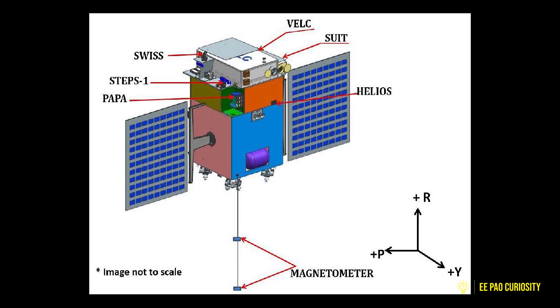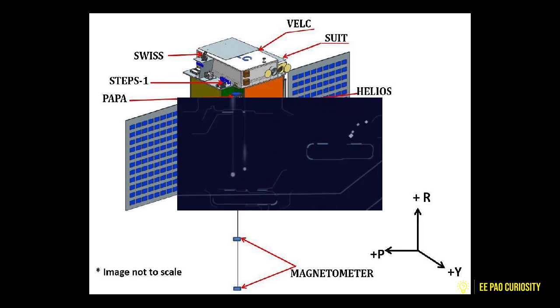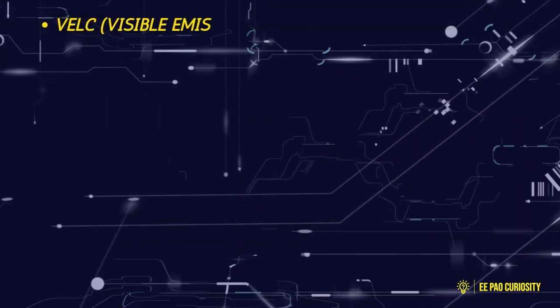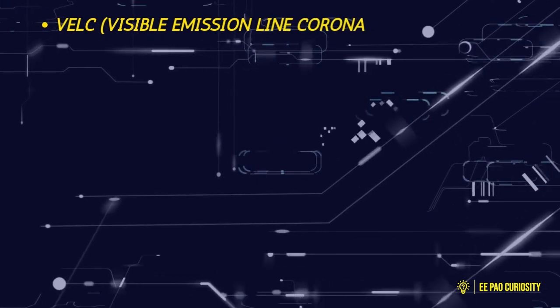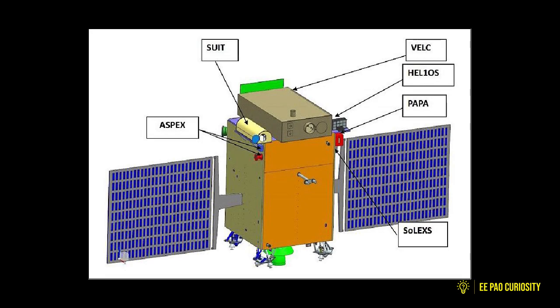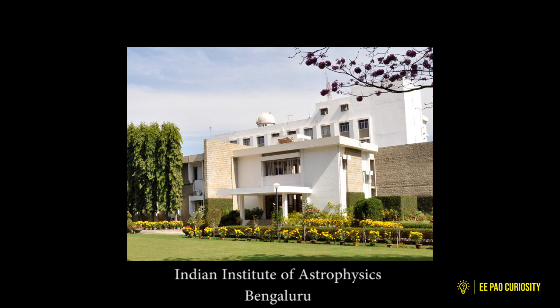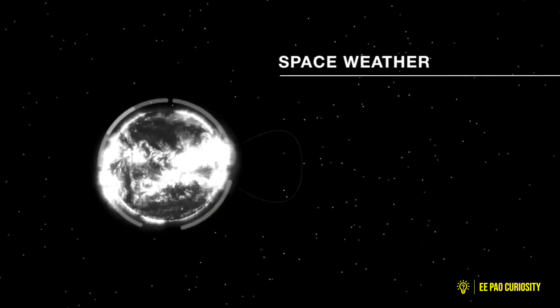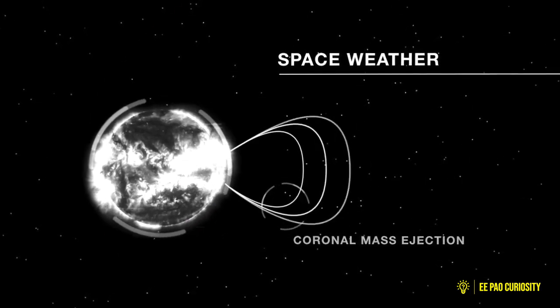On board the satellite, there will be seven scientific payloads. Number one: VELC, the Visible Emission Line Coronagraph. As initially planned, the VELC system will remain the main payload, but with improved capabilities. VELC is developed by the Indian Institute of Astrophysics, Bengaluru, and it will study the diagnostic parameters of the solar corona and the origin of the coronal mass ejections.